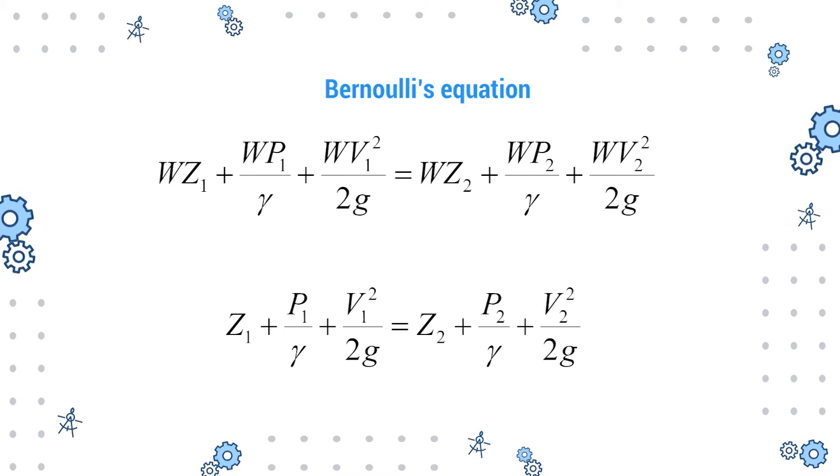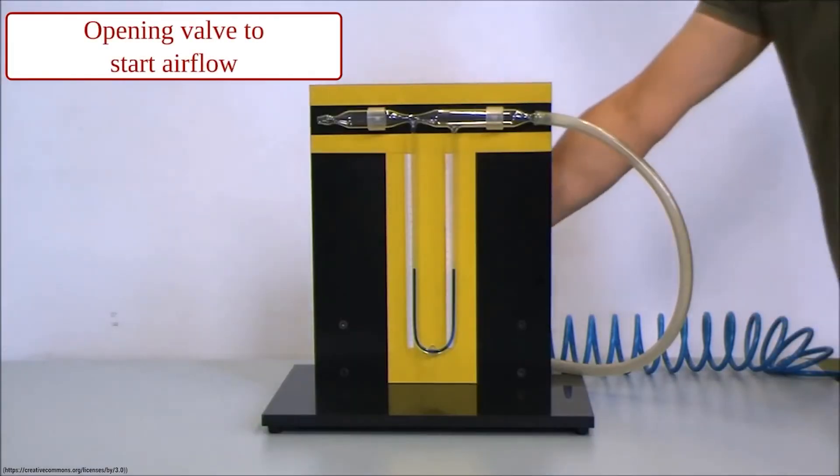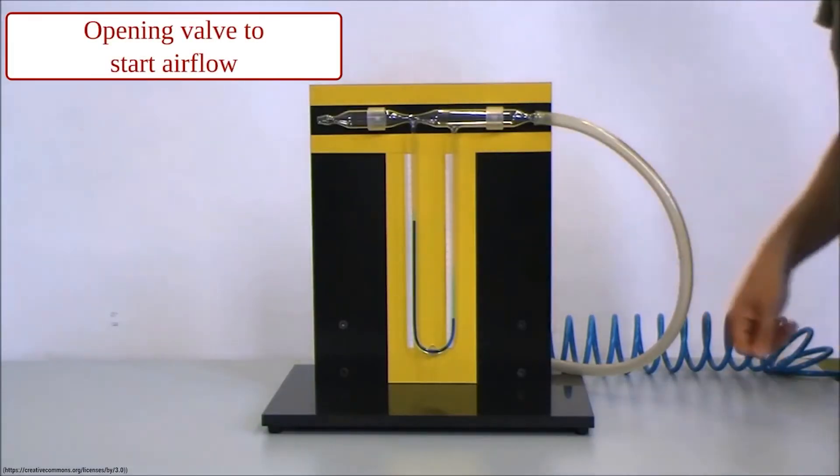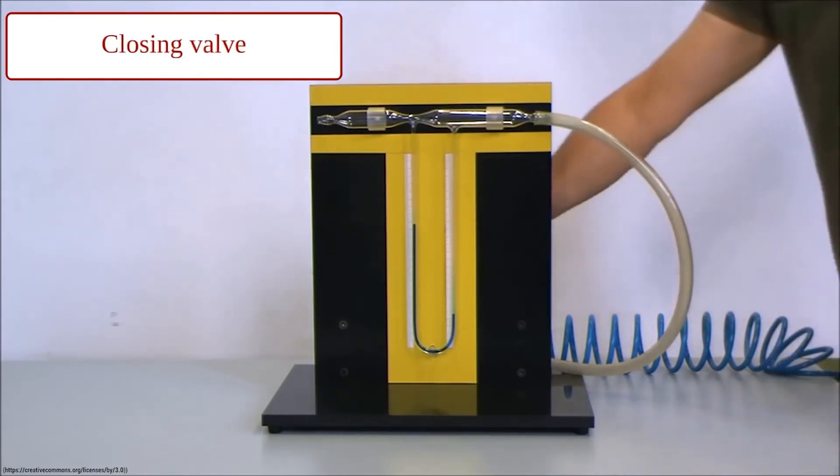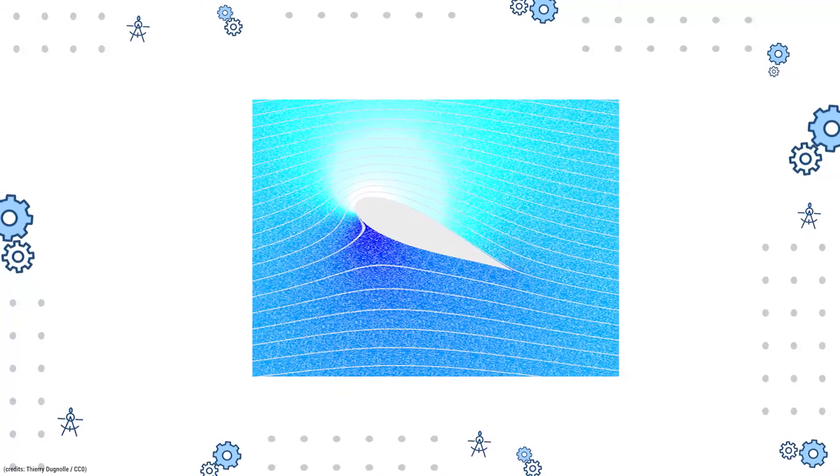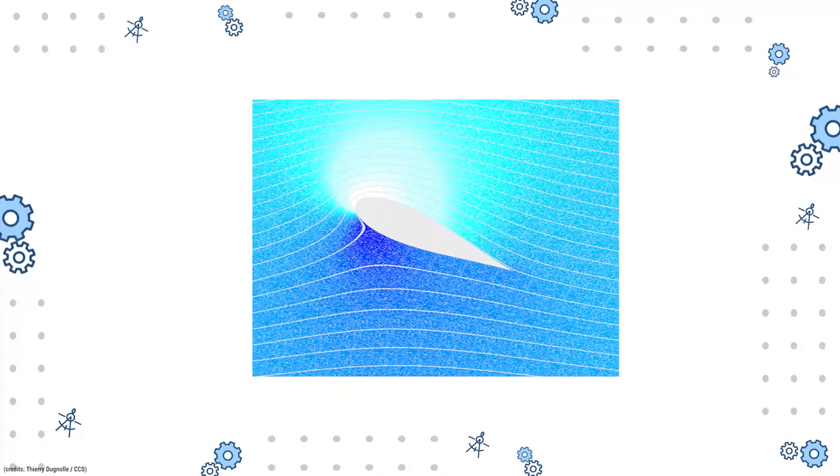Its application can be seen in venturi meters. As the fluid flows through a smaller cross-section, the velocity increases with a decrease in pressure. Bernoulli's equation can also be applied while calculating the lift of an airfoil.